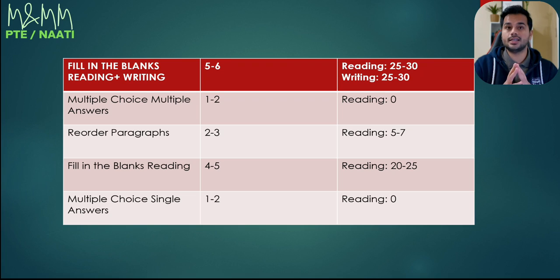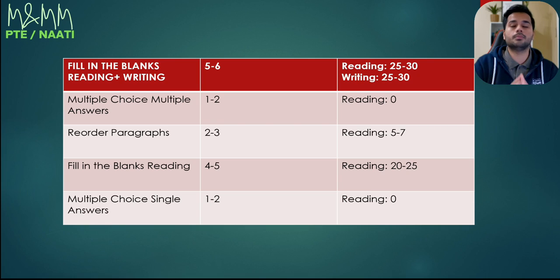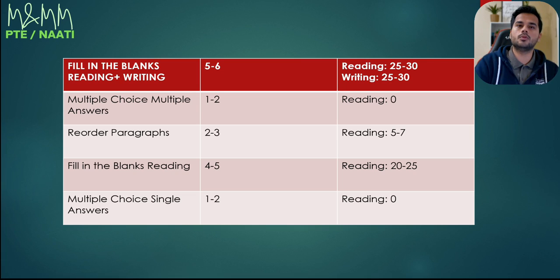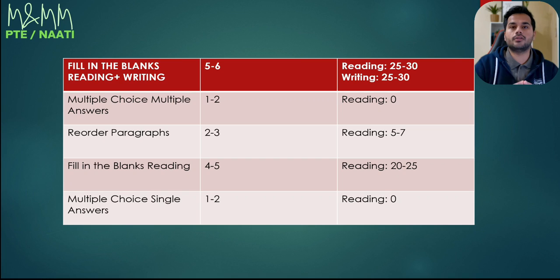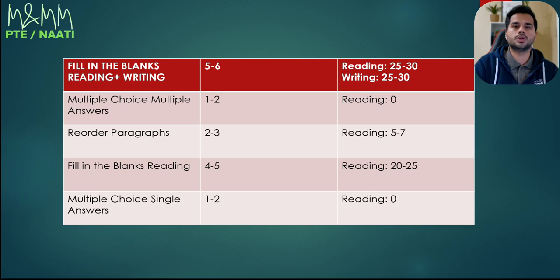I'm not saying zero as in one to two marks — I mean zero. Even with all multiple choice questions wrong in listening and reading, you can still get a perfect 90. I'm not even talking about just 79. So do not skip — just select something in the exam within 10 to 15 seconds and move on. Give most of your time toward fill in the blanks reading and reading plus writing, followed by reorder paragraphs. Watch my other video where I've shared the proper time management for the reading section. Multiple choice questions — don't bother spending any time on them.